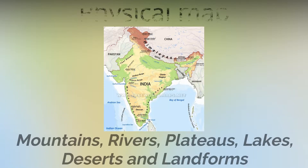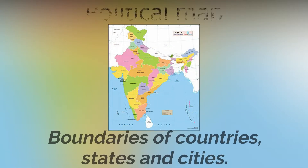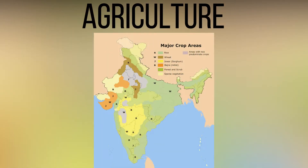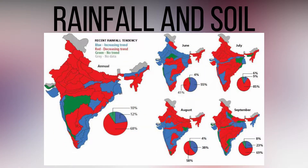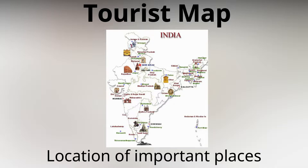Various types of maps: A physical map shows mountains, rivers, plateaus, lakes, deserts and landforms. A political map shows boundaries of countries, states and cities. A thematic map shows industries, agriculture, rainfall and soil. A tourist map shows the location of important places.